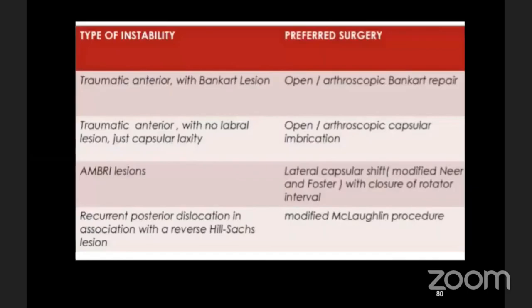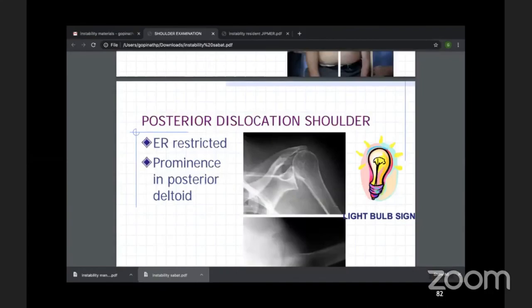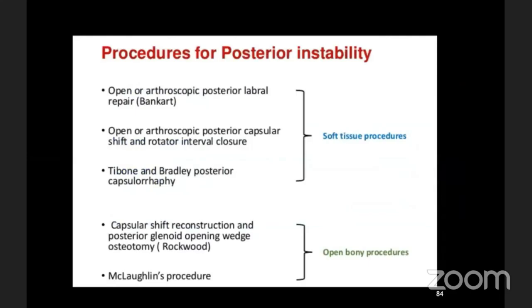Regarding posterior instability: on a standard AP X-ray you may see the light bulb sign and mistakenly think the head is within the glenoid — an axillary view reveals that the head is actually dislocated posteriorly. For posterior instability, you have a reverse Bankart lesion and a reverse Hill-Sachs lesion because the posterior labrum is disrupted, requiring arthroscopic or open repair.